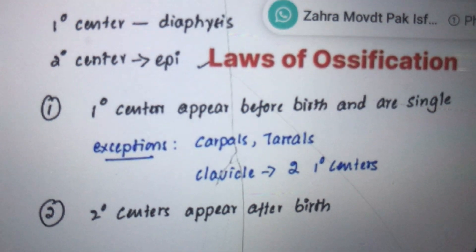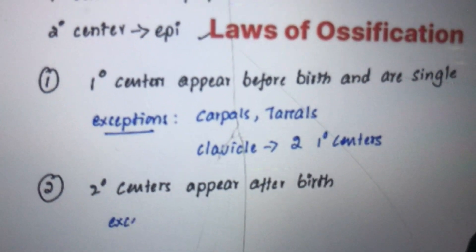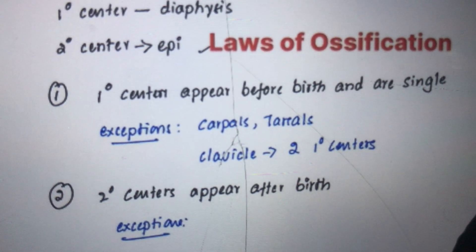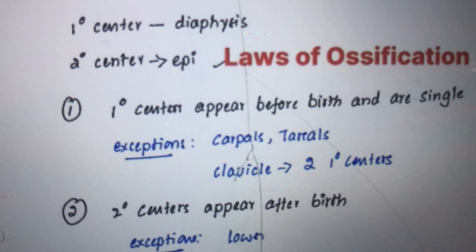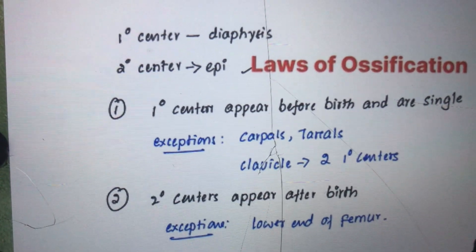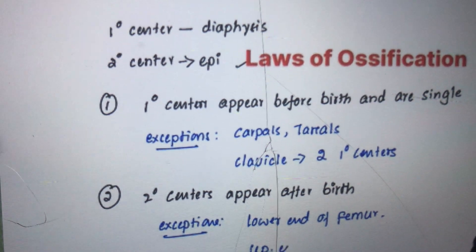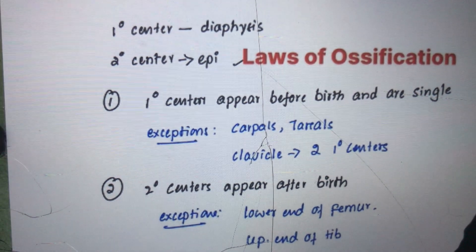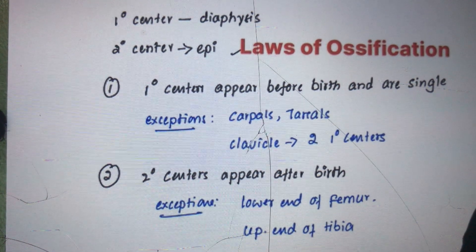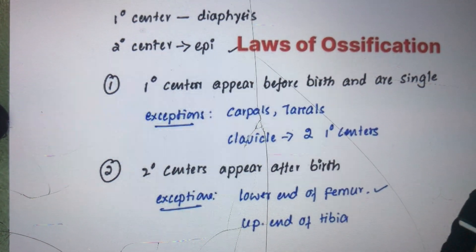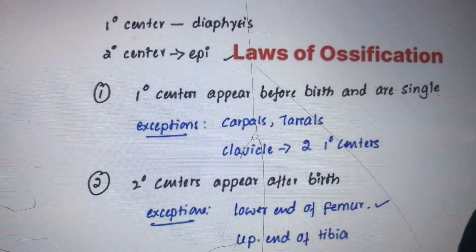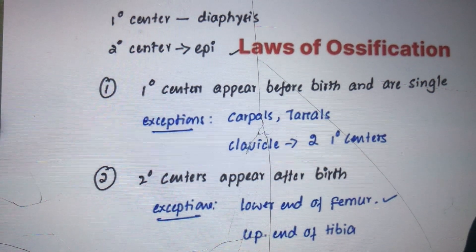The exceptions to the second rule are the lower end of the femur and the upper end of the tibia. For both of these bones, the secondary centers or epiphysis appear just before birth. The appearance of the lower end of femur on an X-ray suggests the child is viable.